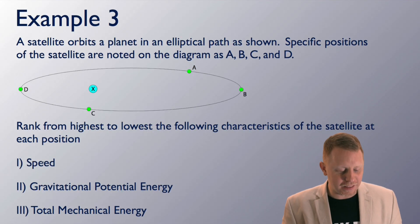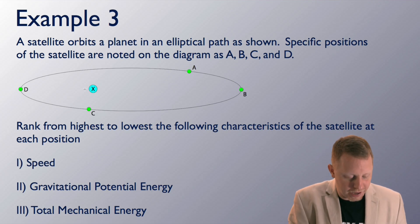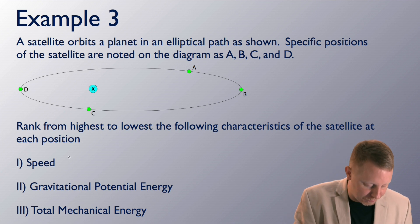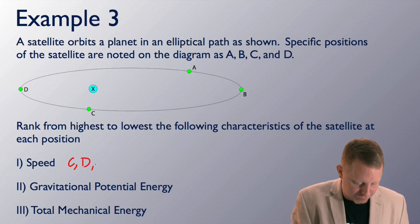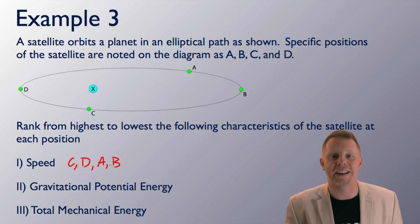Example 3. A satellite orbits a planet in an elliptical path as shown. Specific positions of the satellite are noted on the diagram as A, B, C, and D. Rank from highest to lowest the following characteristics of the satellite at each position. And we're going to start with speed. Well, if we want the highest speed, if you recall from as we've talked about Kepler's laws, that's going to occur when you are closest to our mass. So, it's going to start off highest speed is going to be here at C. Then it looks we'll get to looks like D. A is further away. And finally, B is the furthest away. So, this is from Kepler's second and third laws.